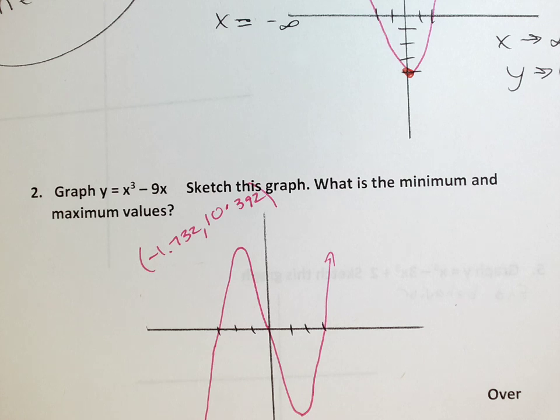So my maximum is about -1.732, so it's about -1.732, comma, 10.392. That's my maximum. Maximum is like the top of a hill. Just the top of a hill. Because there is a bigger max. There is a bigger max because this goes up to infinity, right? But when you talk about a local max, you're talking about the top of a hill, okay?